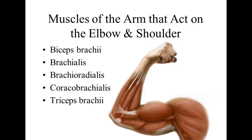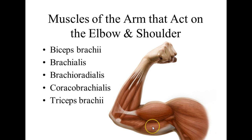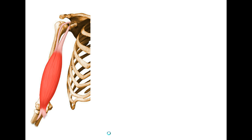Today's lecture is going to be on muscles of the arm that act on the elbow and sometimes the shoulder. We're going to look at five different muscles occupying the upper arm — the brachial region: the biceps brachii, the brachialis, the brachioradialis, the coracobrachialis, and the triceps brachii. The brachial region refers to the upper arm, and all these muscles occupy either the anterior or posterior compartment of the upper arm.